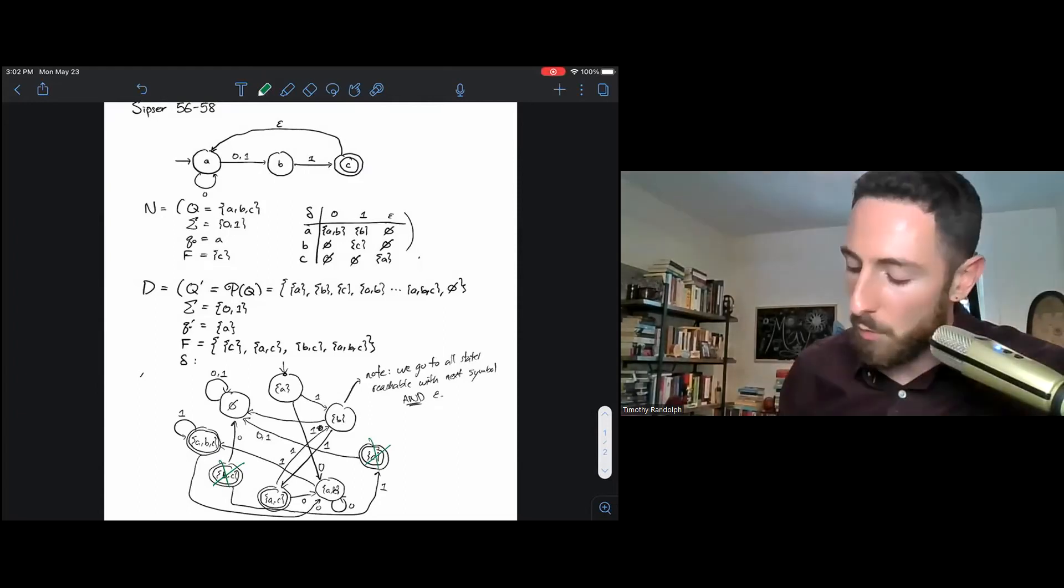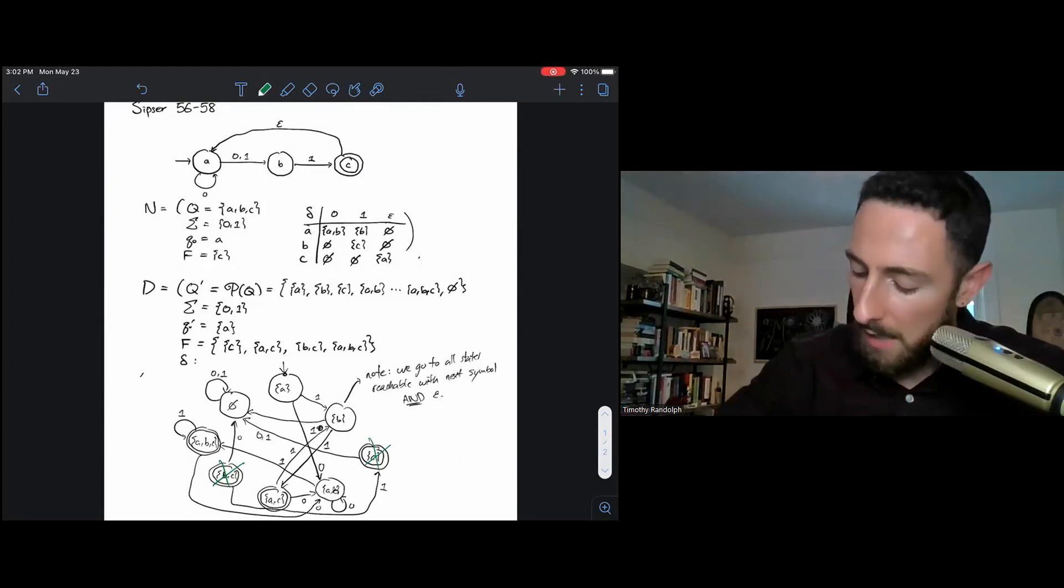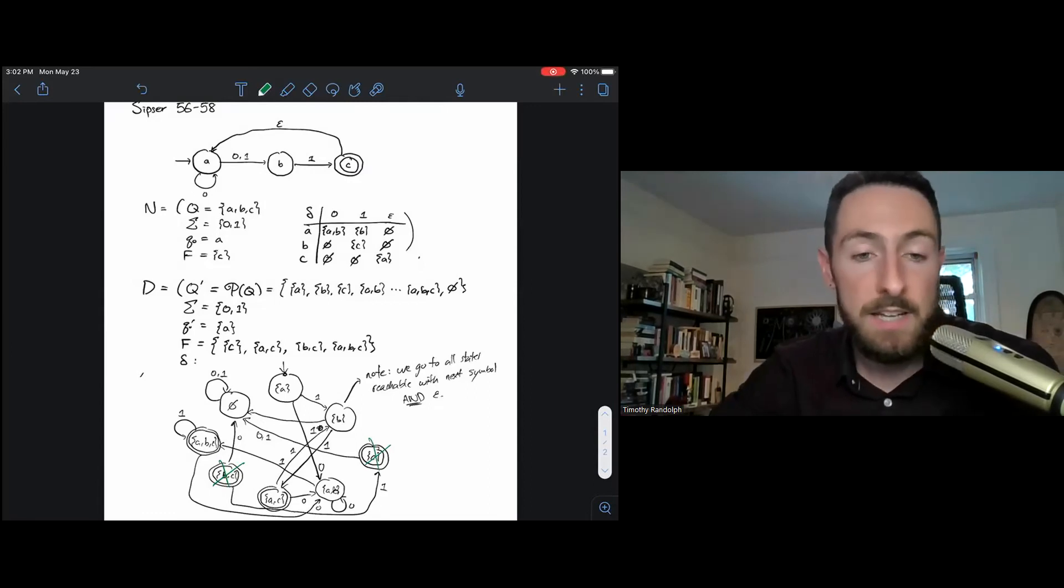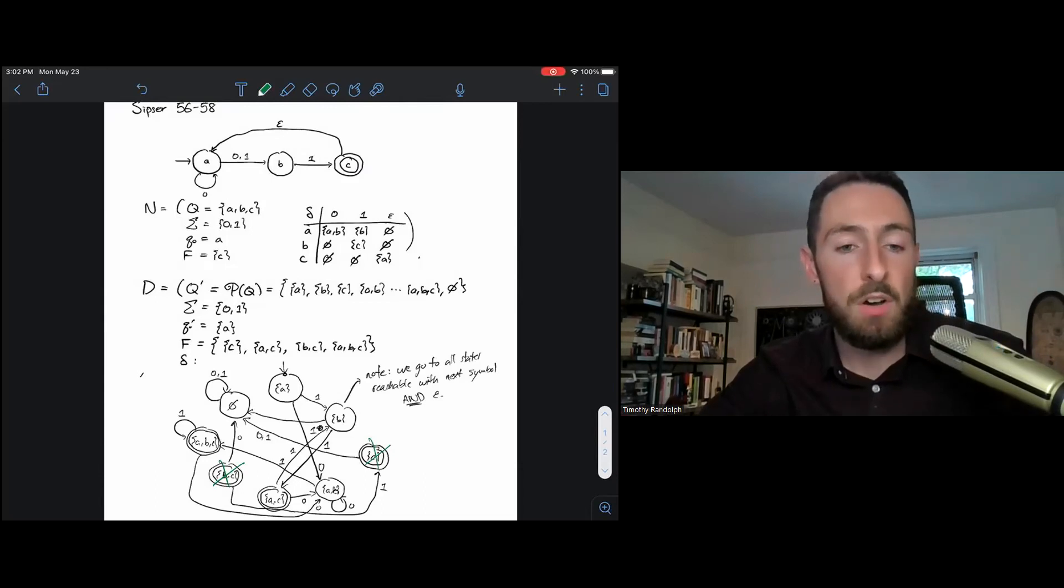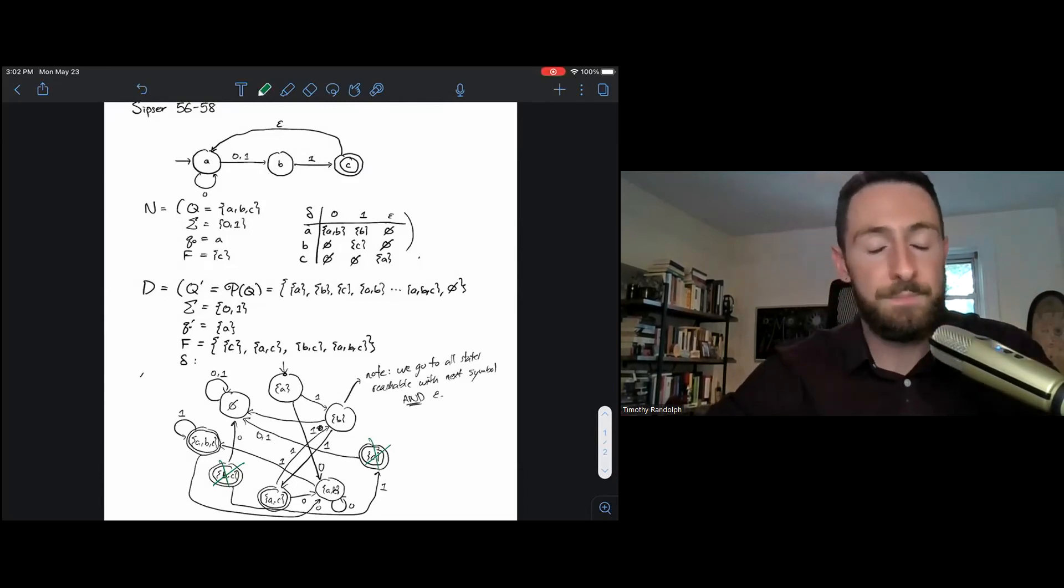So if I wanted to be absolutely sure, what I would do is I would go back and I'd test some strings on both and make sure they accept on a certain string if and only if the other one accepts on that particular string. So that's all for this example video, thanks for watching, see you in class.